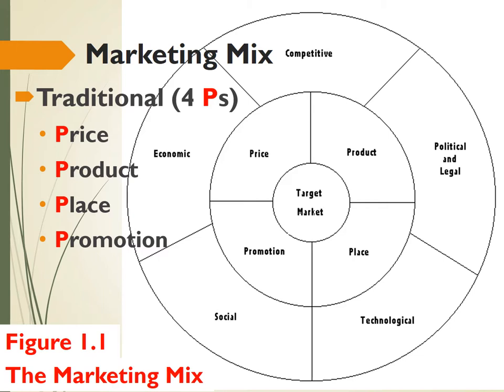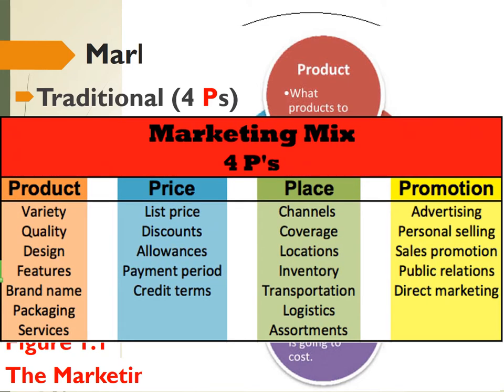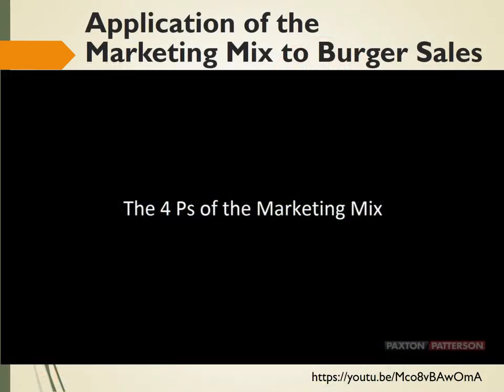Others have produced better models to demonstrate the 4Ps. In the first one, all of the different elements are defined a little bit. In the second, there is a list of different variables associated with product, price, place, and promotion. In the following video by Paxton and Patterson, they describe the 4Ps of the marketing mix in greater detail, and also apply that to how each might be impacted by burger sales and how the targeted market can influence changes to the 4Ps.